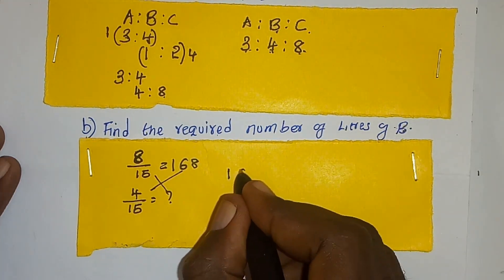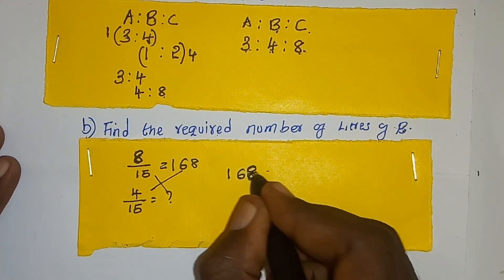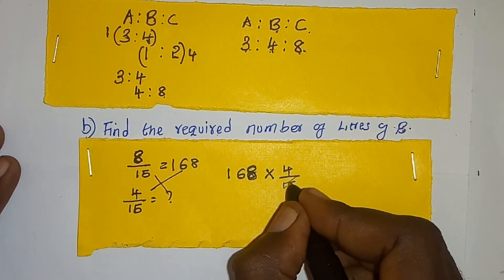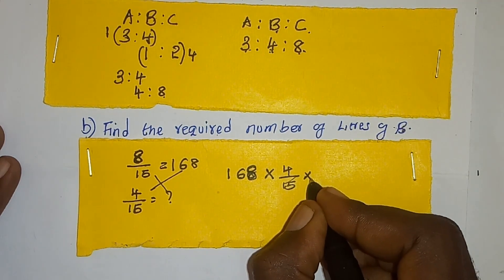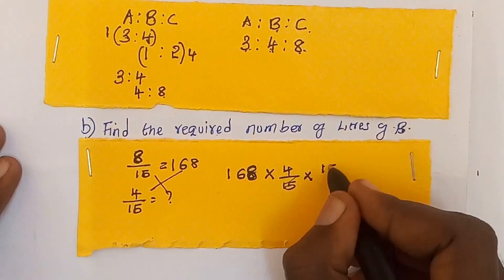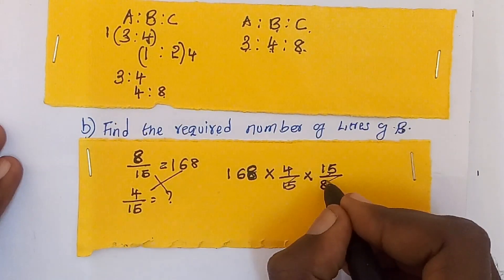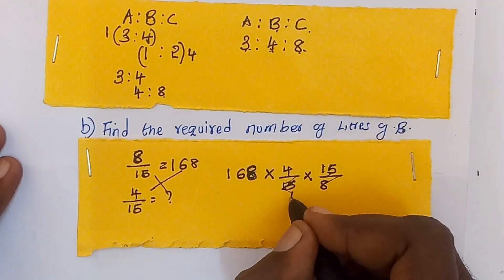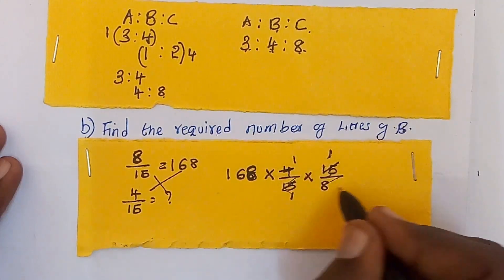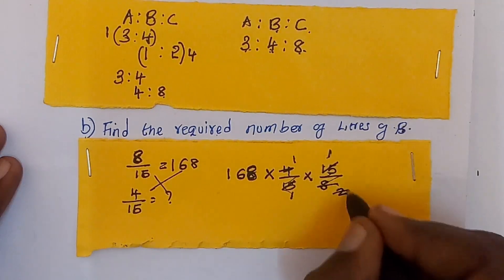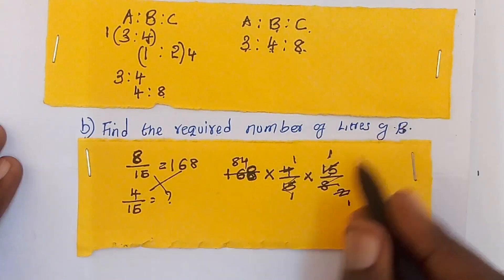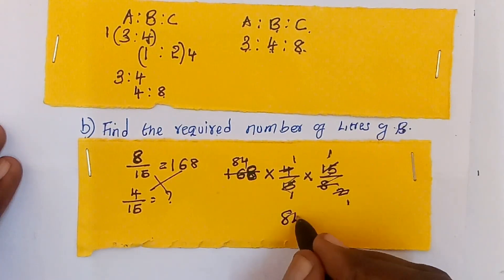We say 168 multiplied by 4 out of 15, which is 15 out of 8. By 15, 1, by 15, 1, by 4, 1, by 4, 2, by 2, 1, by 2, 8, 4. Therefore, the number of liters of B is 84 liters.